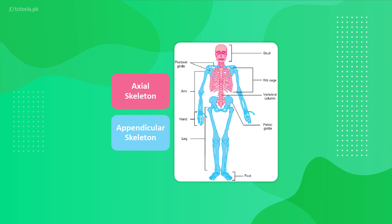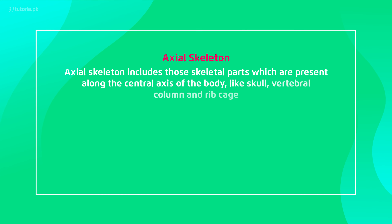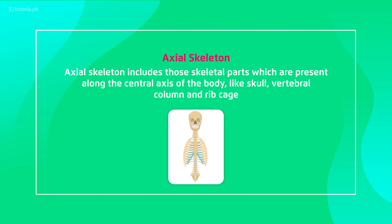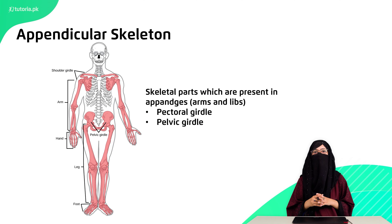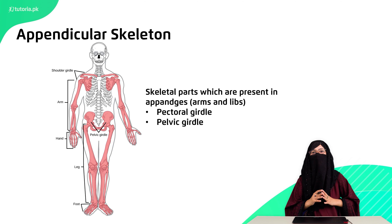If I talk about the axial skeleton, we have the skull, vertebral column, and rib cage. This is designed to protect your body's vital organs. The skull protects your brain, the vertebral column protects your spinal cord, and the rib cage protects your heart, lungs, liver, and other important organs. After that, the appendicular skeleton consists of appendages — hands and feet — which join with the main skeleton.